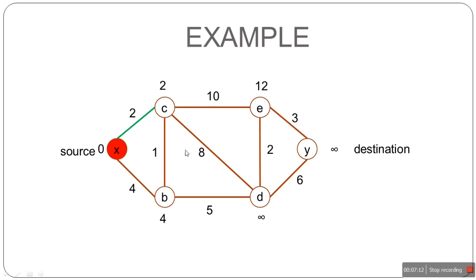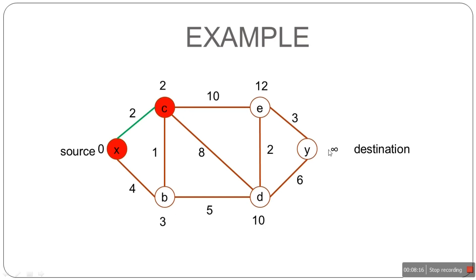Next, the distance from X to D via C is 2 plus 8, which equals 10. Since 10 is less than infinity, we assign 10. Then for neighbor B: the distance from X to B via C is 2 plus 1, which equals 3. Since 3 is less than the current value of 4, we assign 3. All neighbors of C — B, D, E — are now processed. X was also a neighbor but is already visited. So we mark C as visited.